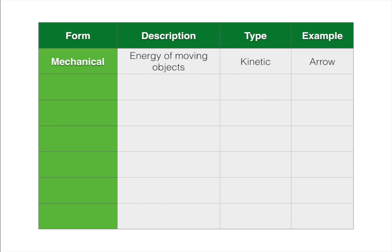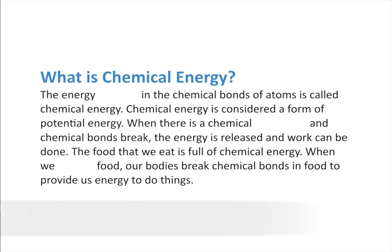So let's go ahead and create our graphic organizer. Make sure you have each of these blanks for each of the forms of energy we're going to talk about. Mechanical energy is the energy of moving objects. It is kinetic energy because it's moving, and a good example would be an arrow in flight.